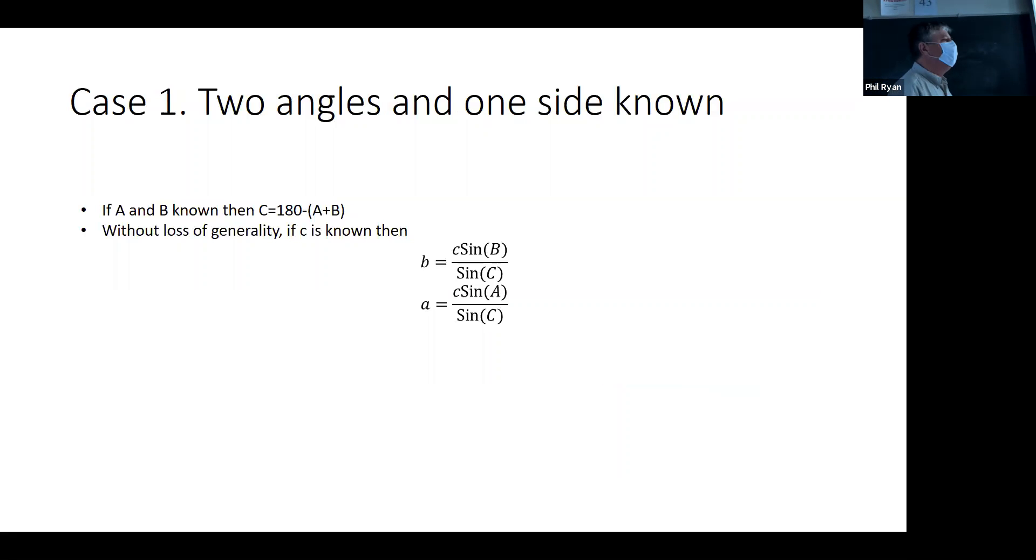So how do you solve triangles? It depends what information you're given. You can be given two angles and a side. Once you're given two angles, then you know the third angle because it adds up to 180. Then you just use the sine law. For example, if we know what C is, if that's the given side, then we just find the other sides by taking C and multiplying it by the ratio of the sines.